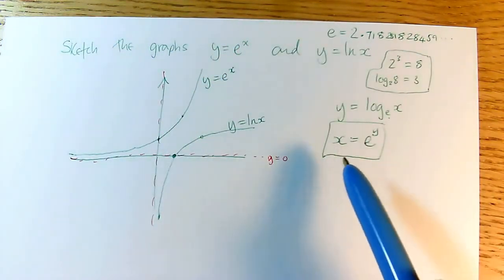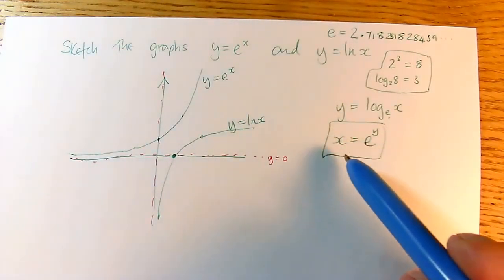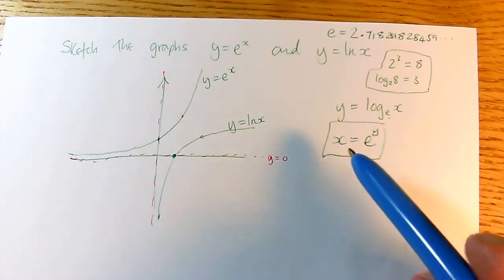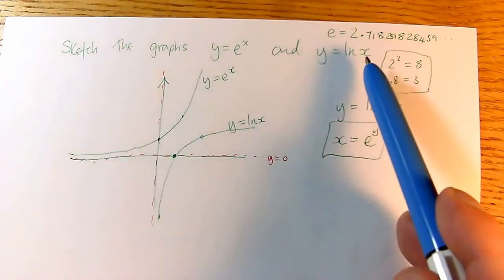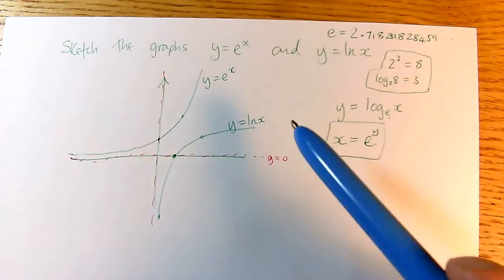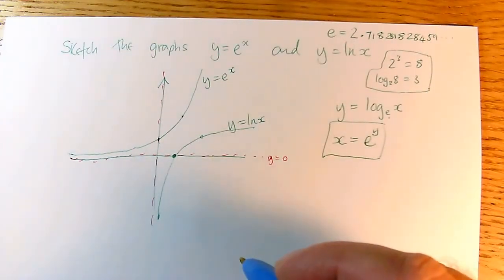And this situation, where one function is the same as the other but with the inputs and outputs swapped, is the relationship between a function, this is the original function, and this is its inverse function. So you get a similar kind of situation happening if you go from x squared to the square root of x. That's another inverse function relationship.